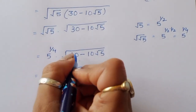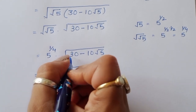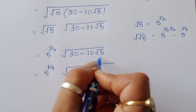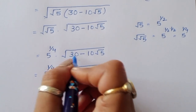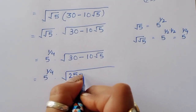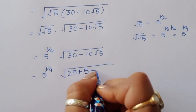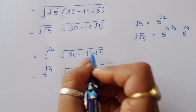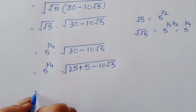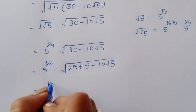We convert 30 into 25 plus 5, since 25 plus 5 is 30. We are using multiples of 5 here. So it becomes 5^(1/4) times square root of (25 plus 5 minus 10√5).